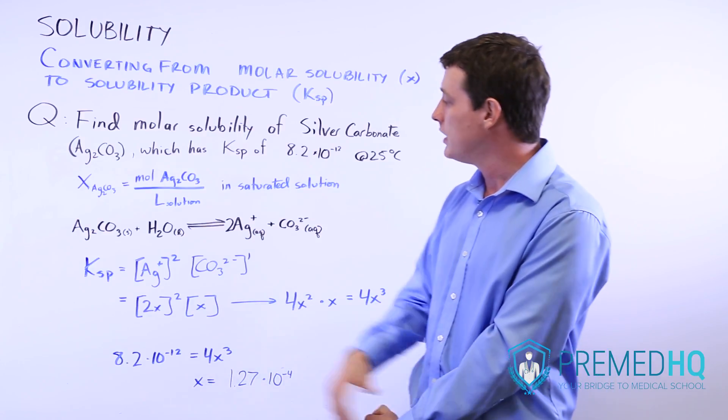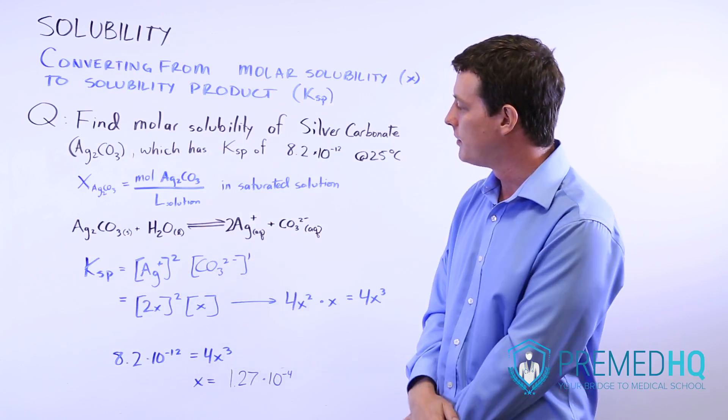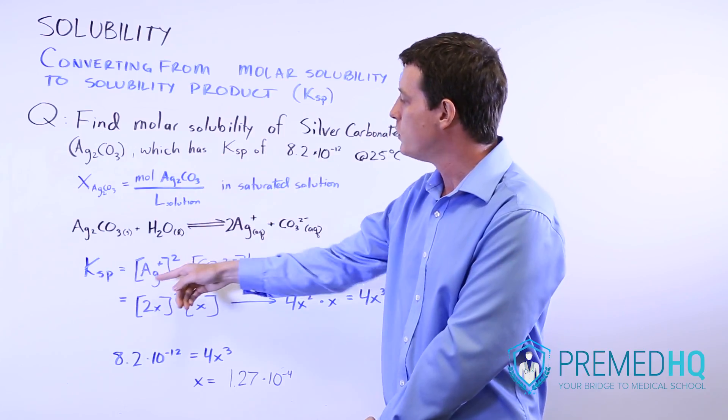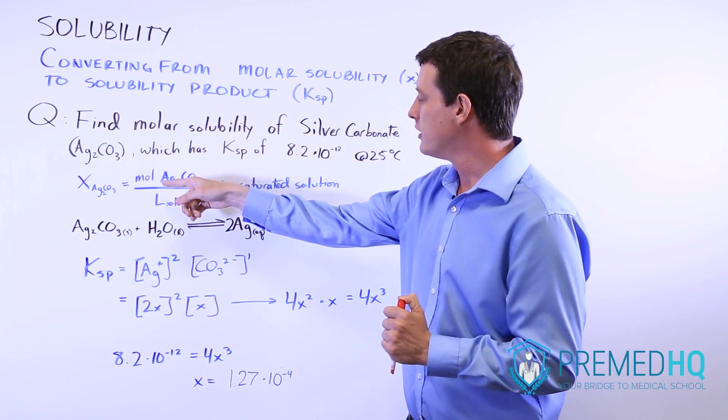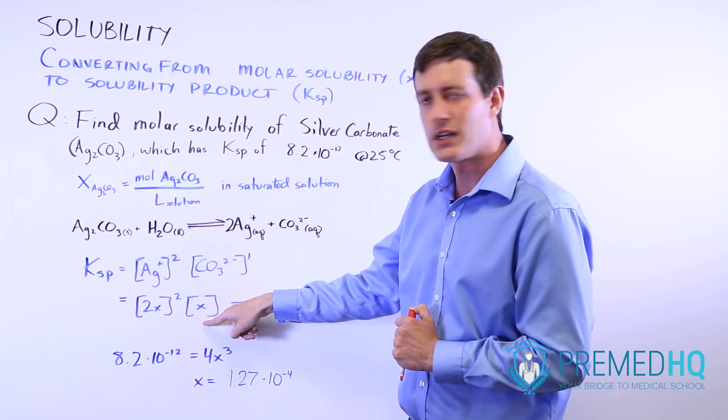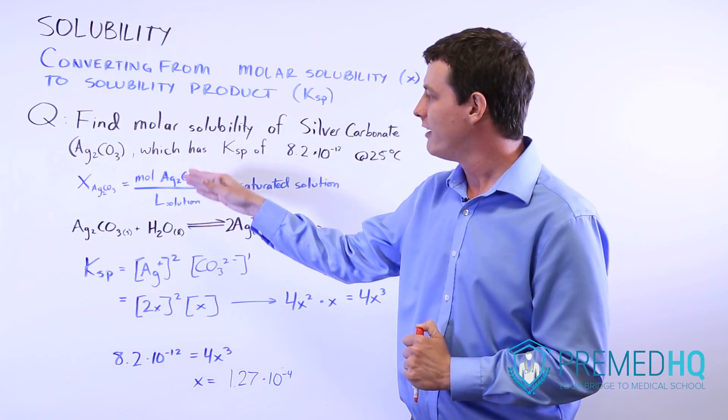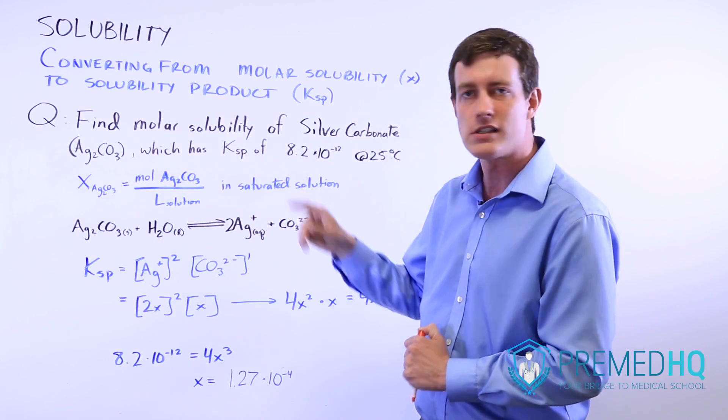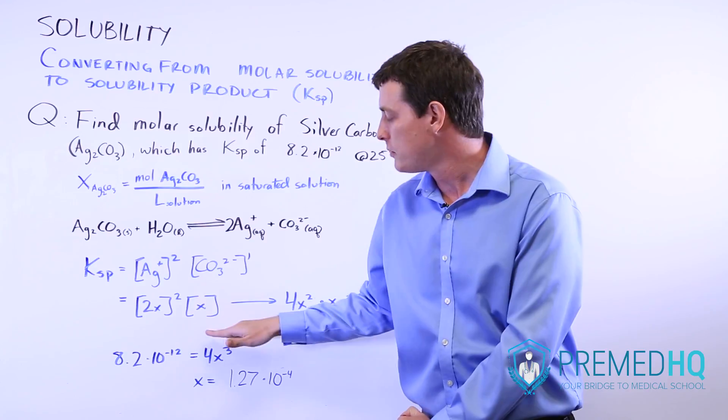We can represent the KSP as [Ag+]^2 times the concentration or the molarity of carbonate ions to the first power. Remember that for every mole per liter of silver carbonate that we put in, we'll end up getting two silver ions, so our concentration will be 2X. For every mole per liter of silver carbonate that we put in, we'll end up getting only one carbonate ion, so our carbonate ion will be represented by just X. We can represent KSP using X because of that realization that for every mole per liter that you put in of this, you'll end up getting two Ag+ and one CO3^2-. Here we have the equation that represents KSP in terms of molar solubility.